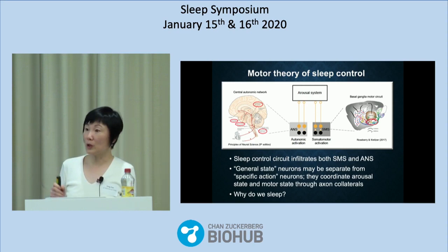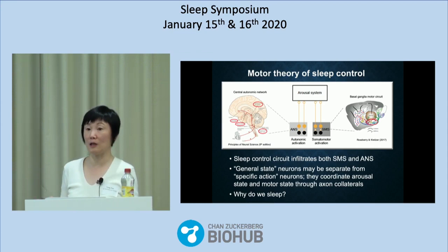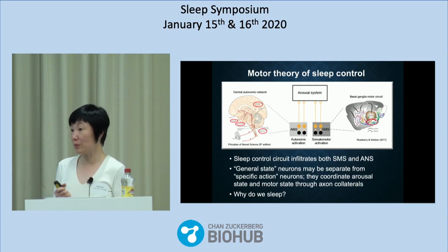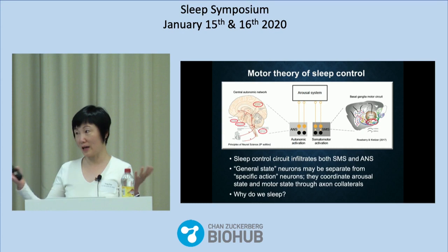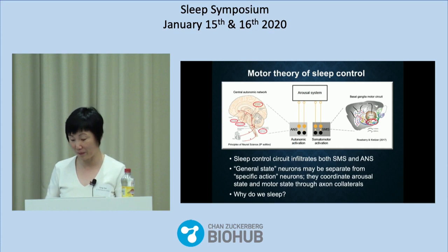We don't know what all those processes are yet. They probably include synaptic homeostasis. They might also include something as basic as cellular repair — to repair damages accumulated during movement. I don't just mean muscle damage caused by exercise, which by the way is a very important function of sleep for athletes. But for scientists in this room — mental athletes — I think neurons also accumulate damage during prolonged arousal and need to be repaired during sleep. That's something we're looking into right now.